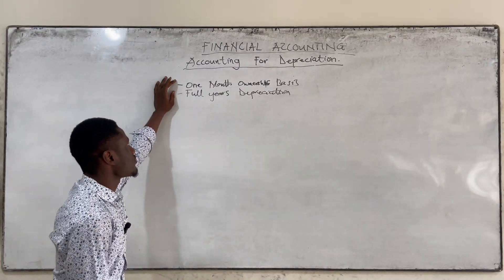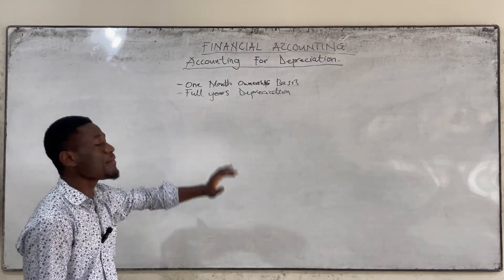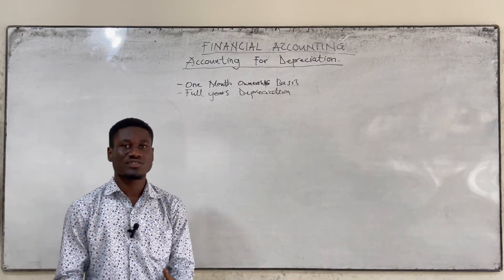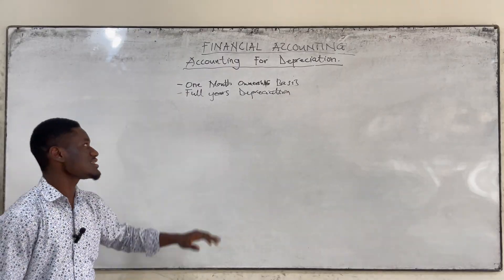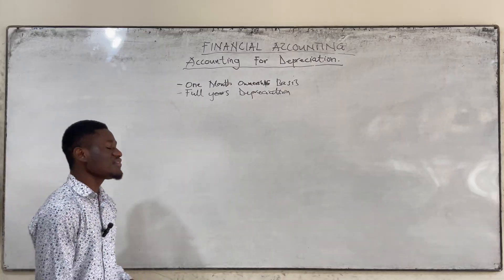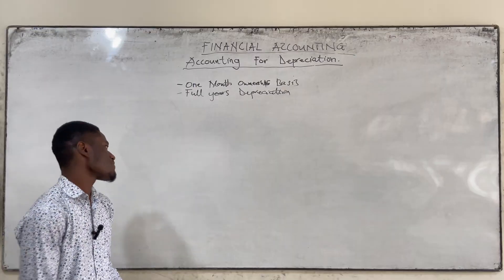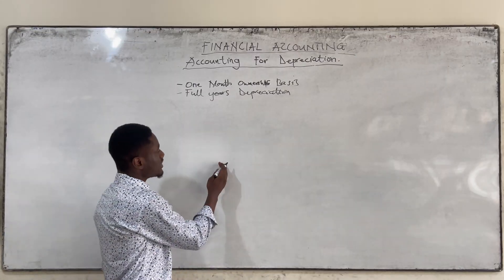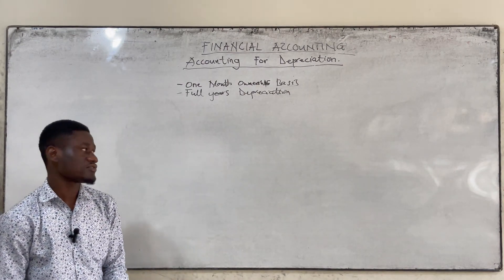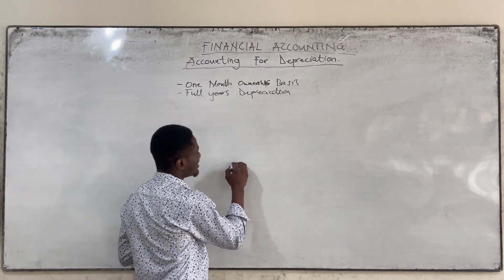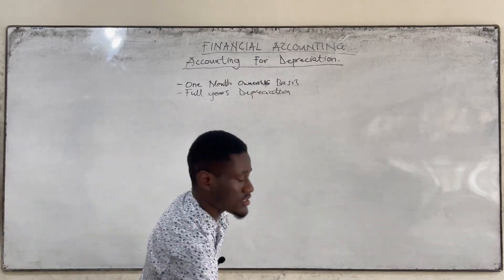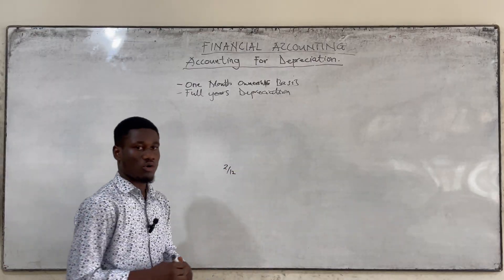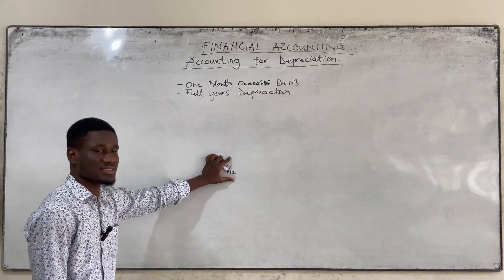When the question tells you to calculate depreciation on the basis of one month ownership, what you are going to do is consider the number of months the asset has been in use. So if the asset was bought in November and the year is ending 31st December, from November to December is two months, so you are going to consider the months — that's 2 over 12.